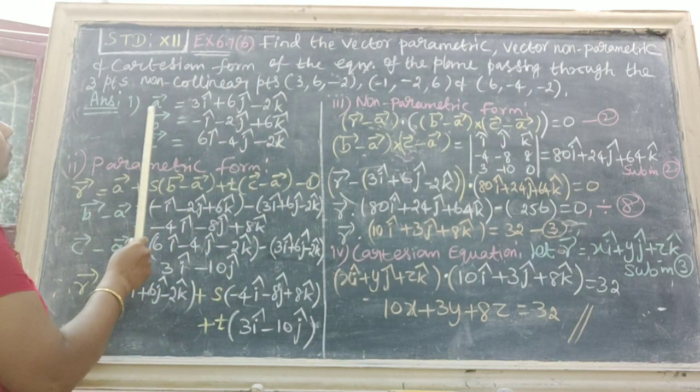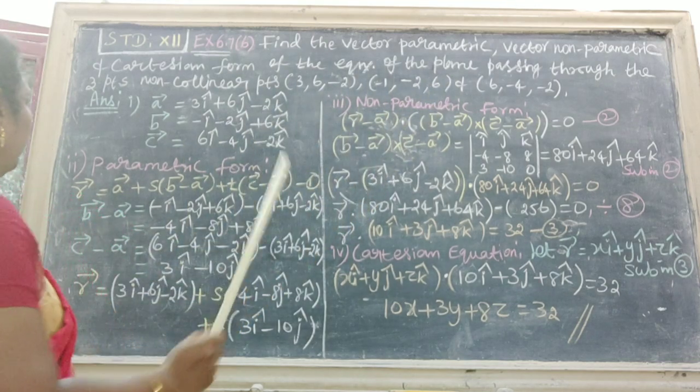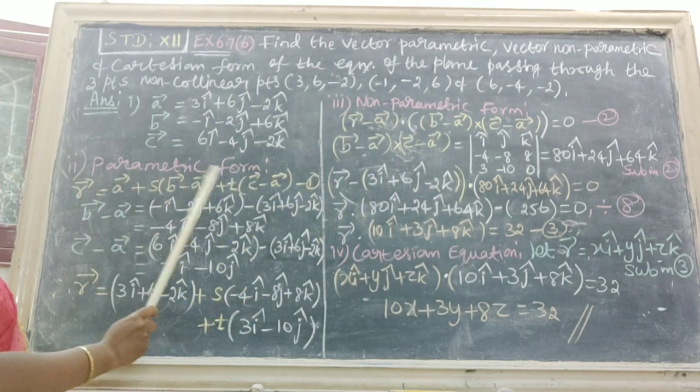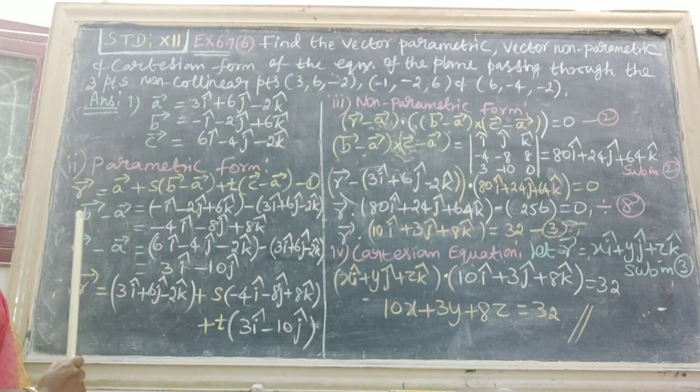Then write down A vector equal to first one, B vector equal to second one, C vector equal to third one. Next one is parametric form. Write down the type 3 formula. That is equation number 1.